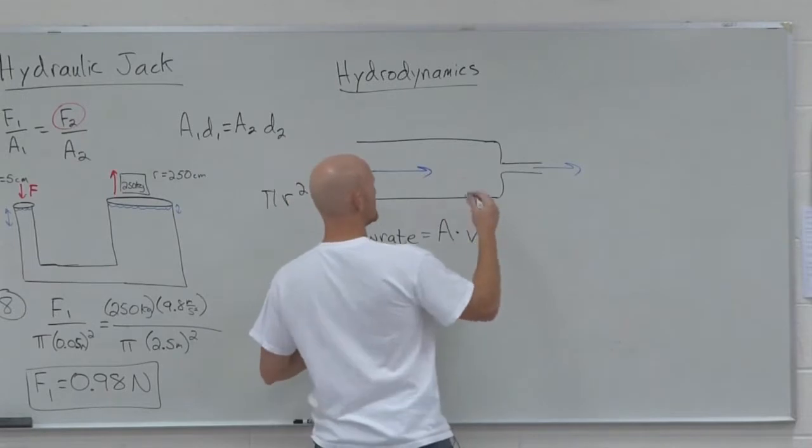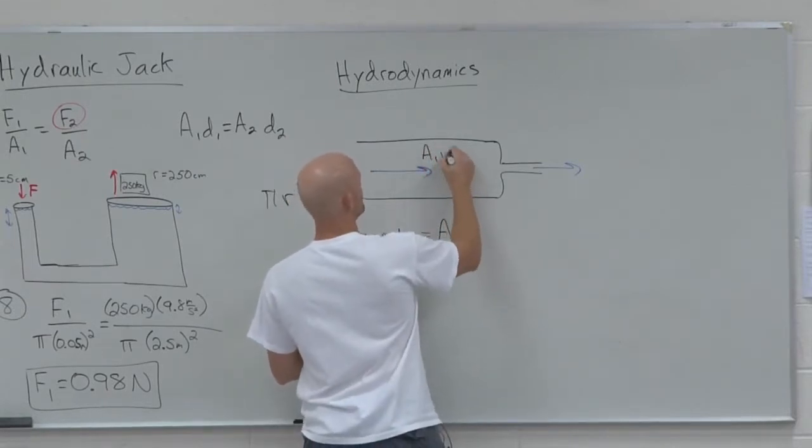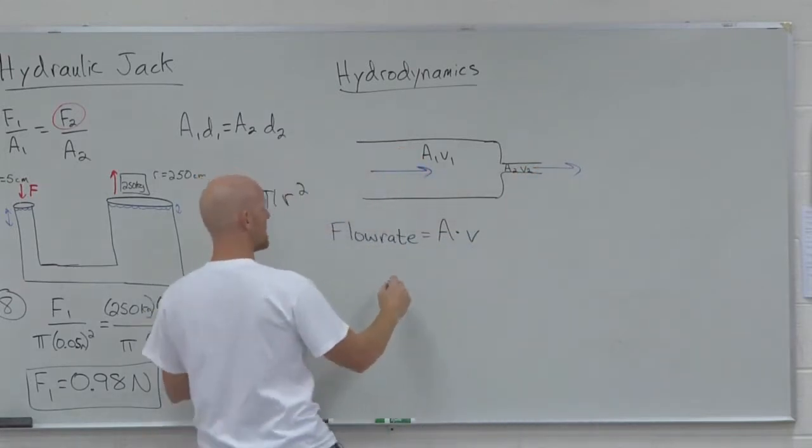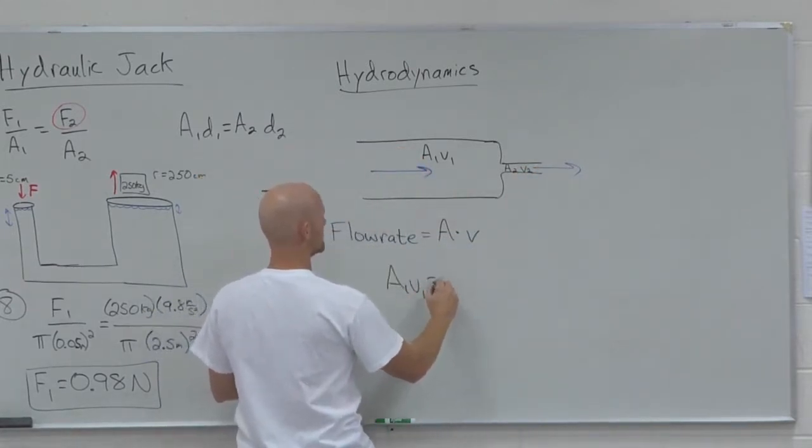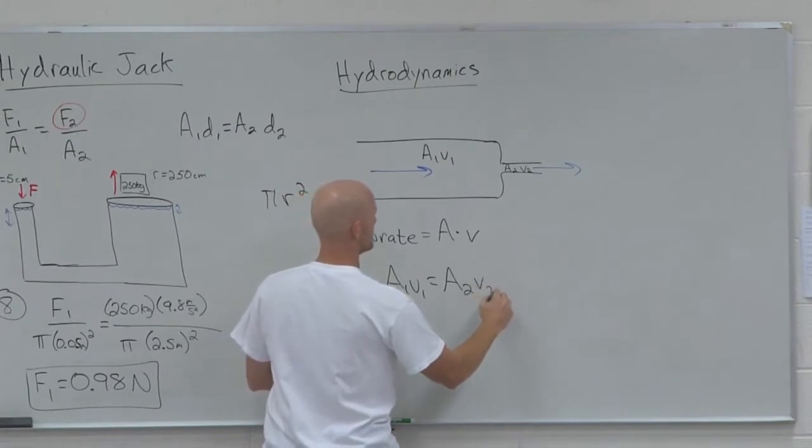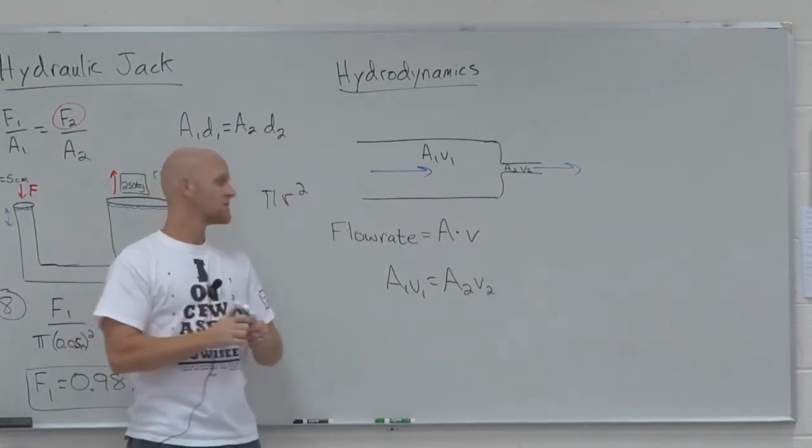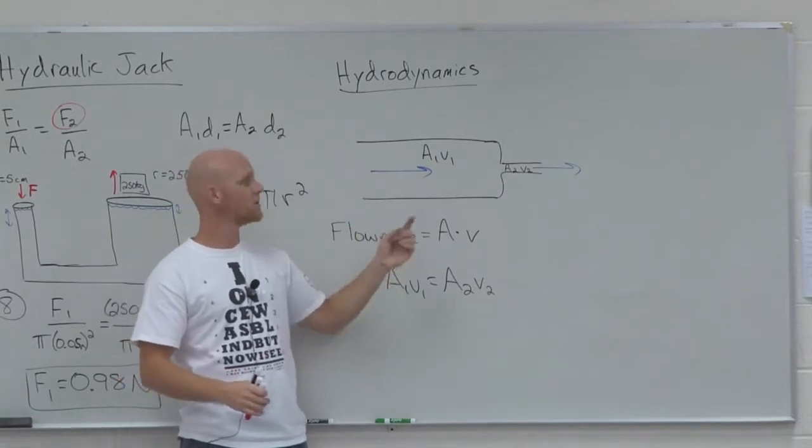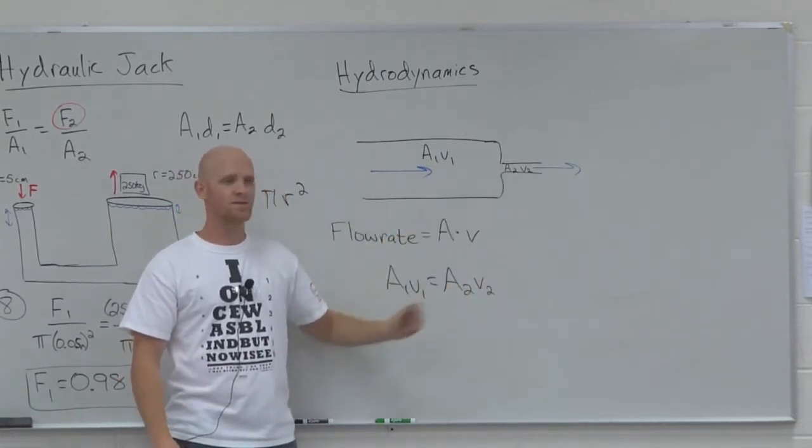We'll often say that if this is a1 and this is v1, and in here is a2 and v2, the flow rate being constant would mean that a1 v1 equals a2 v2. So the smaller the cross-sectional area of the pipe where it's flowing, in this case a nozzle, the higher the velocity.